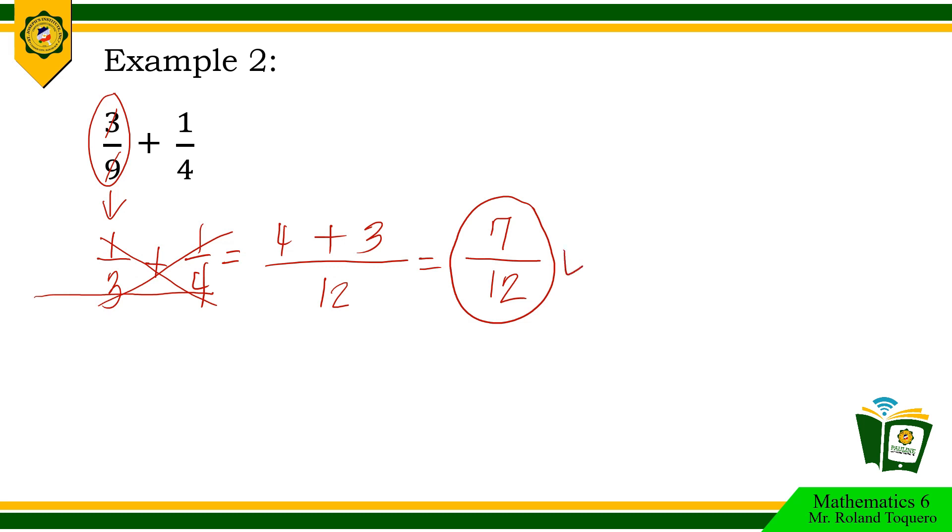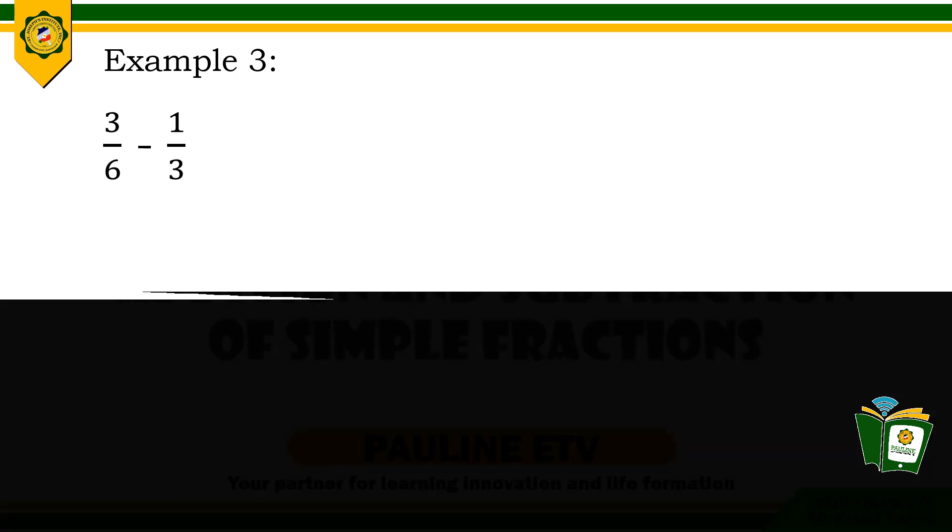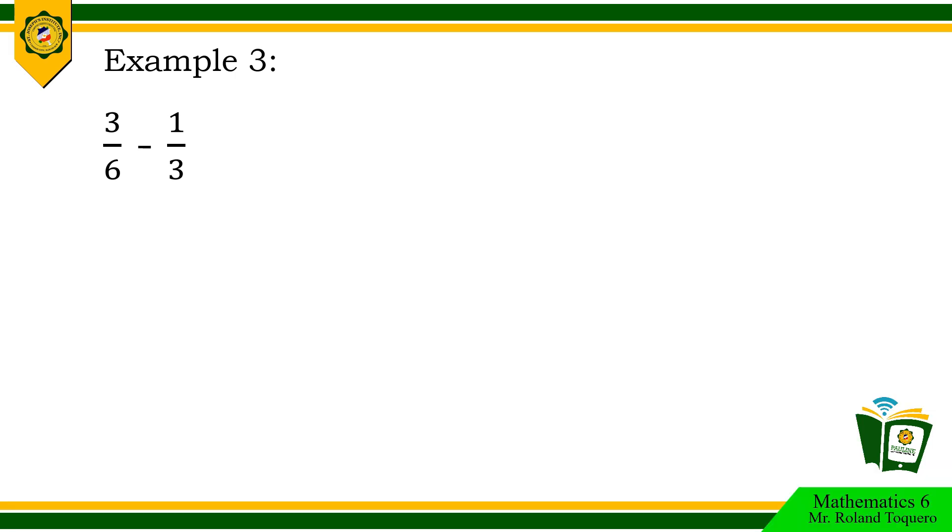Let us proceed to subtraction of simple fractions. Here is the given problem. 3 sixths minus 1 third. 3 sixths can still be reduced to the lowest term by dividing both 3 and 6 by 3. The lowest term is 1 half. 1 half minus 1 third.